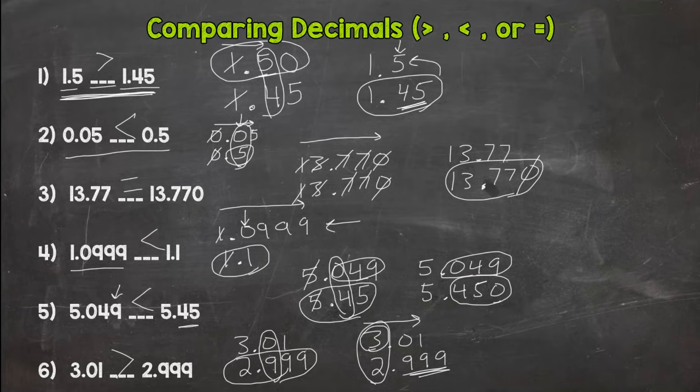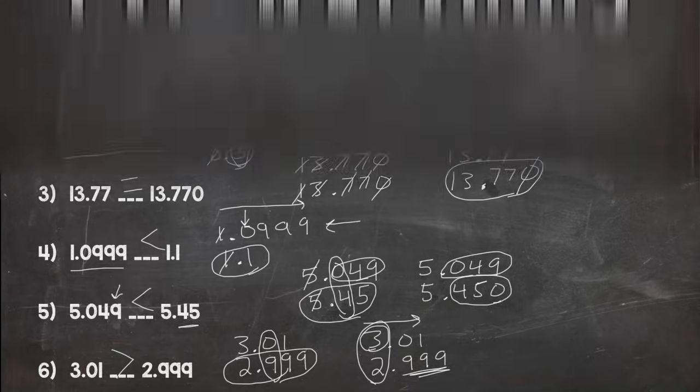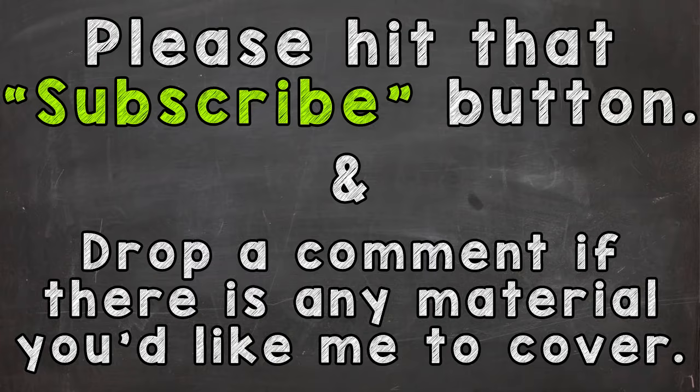So: line your decimals up, go left to right, and use placeholder zeros if need be. Comparing decimals isn't too bad. Head over to the mastery check and try some on your own to see if you have it down. Thanks for watching — please hit that subscribe button and drop a comment if there's any material you'd like me to cover.